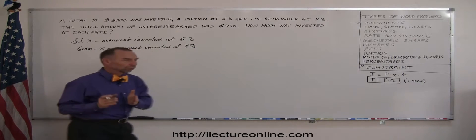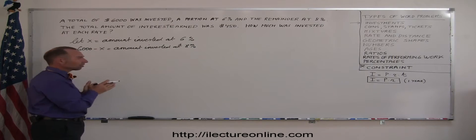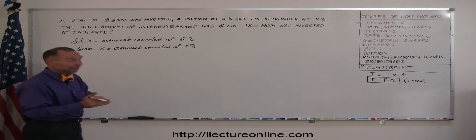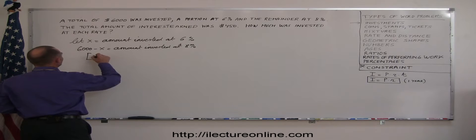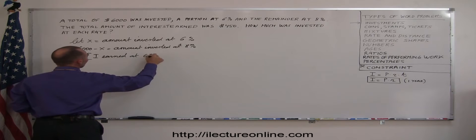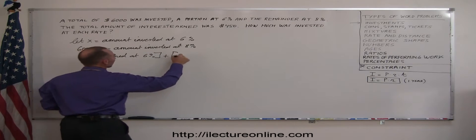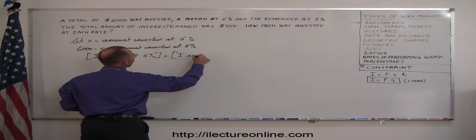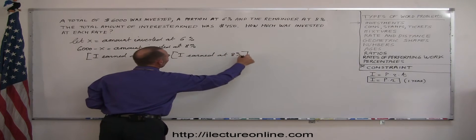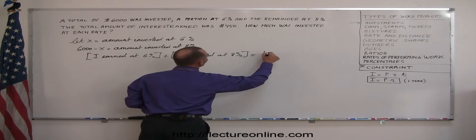So, the interest earned with my investment at 6% and the interest earned with the amount invested at 8% should add up to $450.